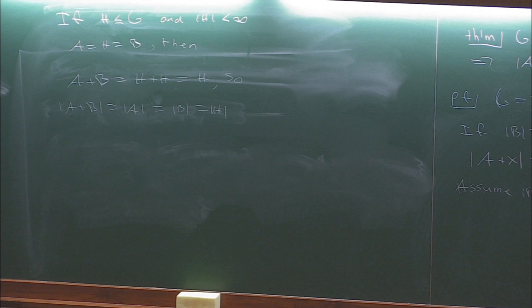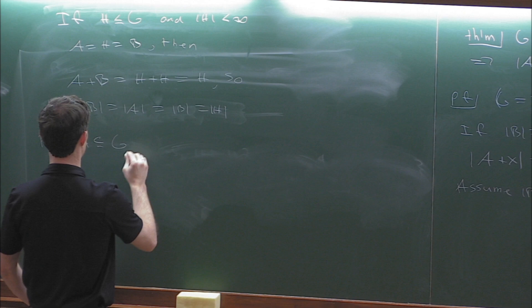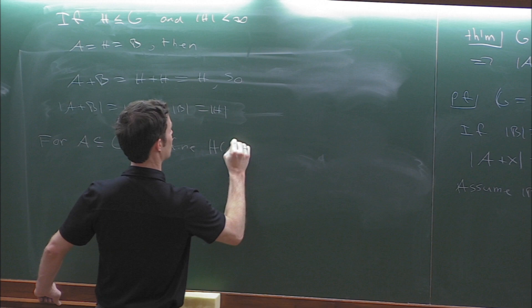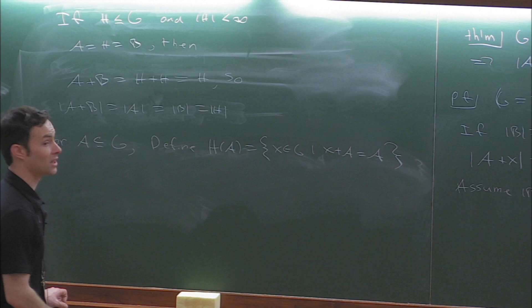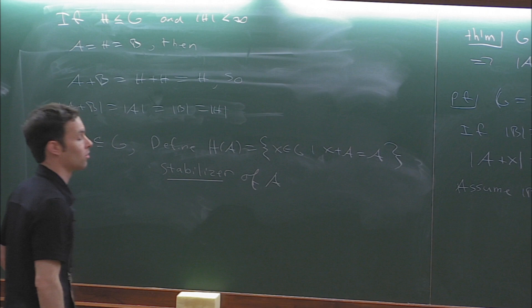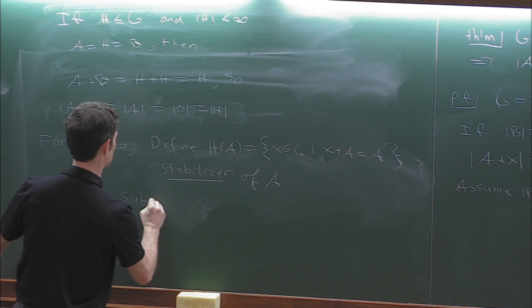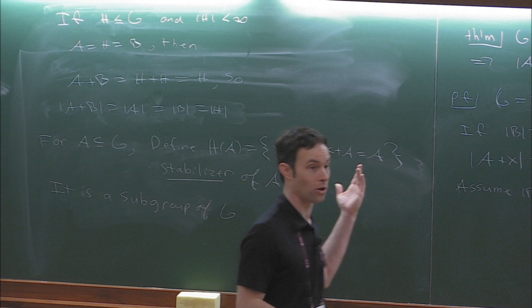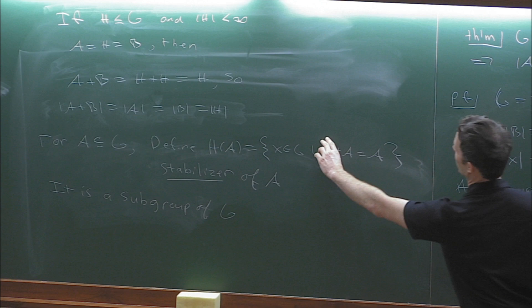To discuss Kneser's theorem, let's introduce some notation. For a subset A inside G, define H(A) to be all the elements x inside G such that x+A = A. This is called the stabilizer. It's very easy to check it's a subgroup: zero is inside there, and if x and y are inside there, their sum is inside there; it's closed under addition and subtraction.